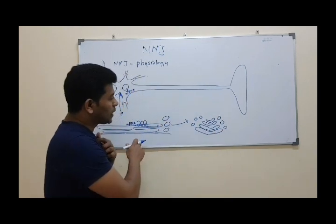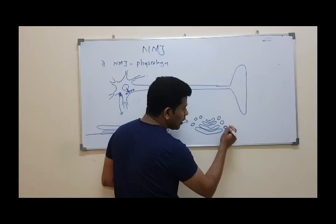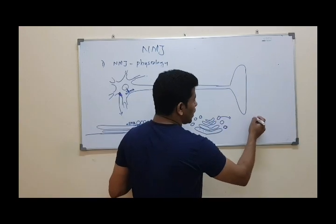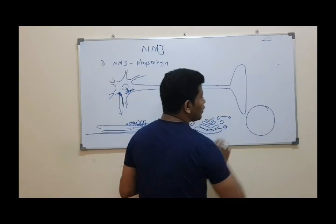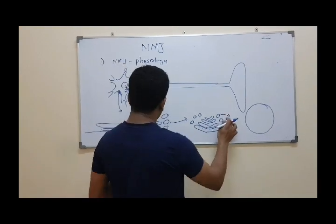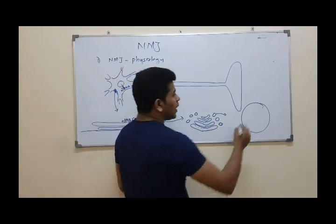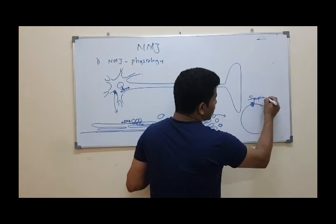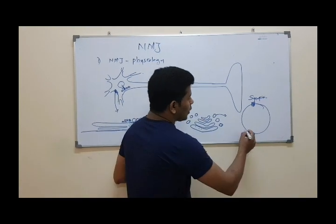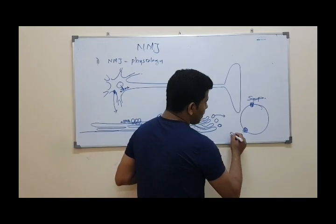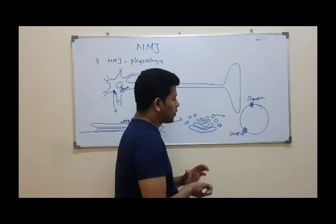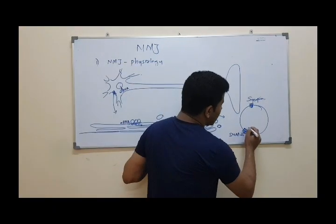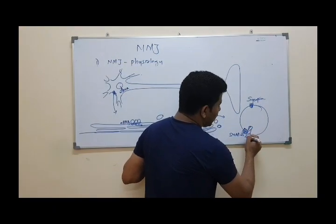If you have special proteins, you can process the vesicles — empty vesicles. What are the vesicles? Synapses. That protein is SNAP25 — Synaptosomal Associated Protein, 25 kDa. That protein is SNAP25.